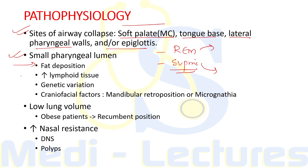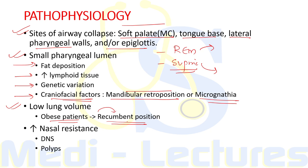Risk factors for OSA include small pharyngeal lumen due to fat deposition, increased lymphoid tissue, genetic variation, or craniofacial factors like mandibular retroposition or micrognathia. Low lung volumes — particularly pronounced in obese patients, especially in the recumbent position — are an important cause. Increased nasal resistance due to deviated nasal septum or nasal polyps is also a risk factor.